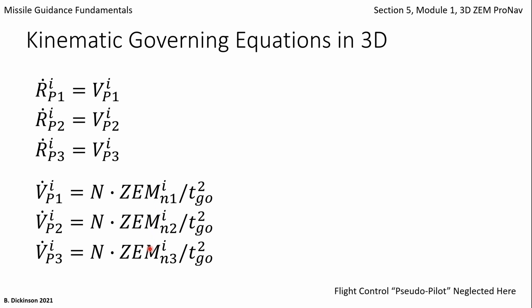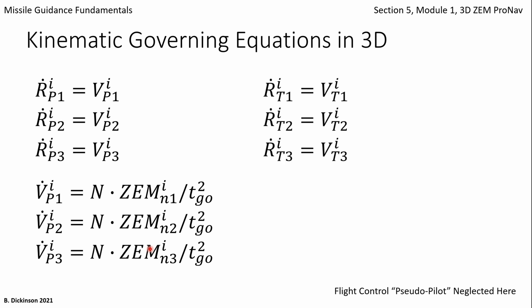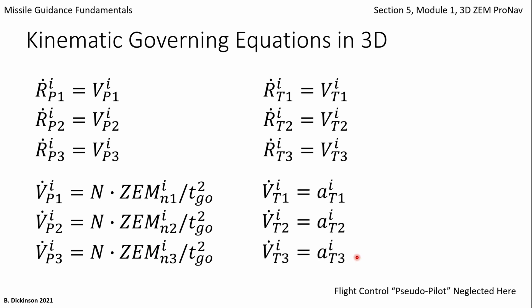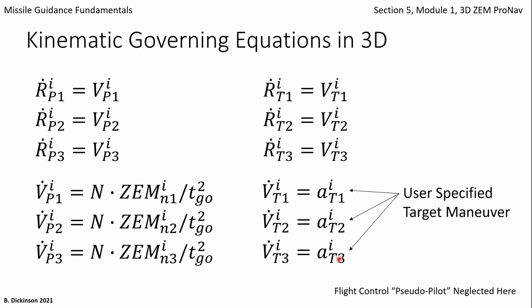At this stage, I'm not going to implement a pseudopilot like I have in previous modules, but we will get to that in the coming modules of this section. Here are the target position equations and target velocity equations. Integrating gives VT1, VT2, and VT3. The right-hand side is the target acceleration, and this is a user-specified target maneuver. For now, we're going to leave this general as something that could be chosen by the user of the simulation.